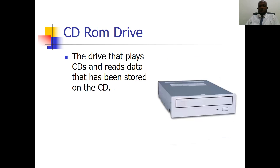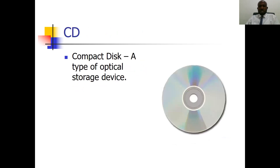There is also the CD-ROM drive — the drive that plays CDs and reads data that has been stored on them. A compact disc is a typical example of an optical storage device. We also have the DVD, which is another form of disc storage.